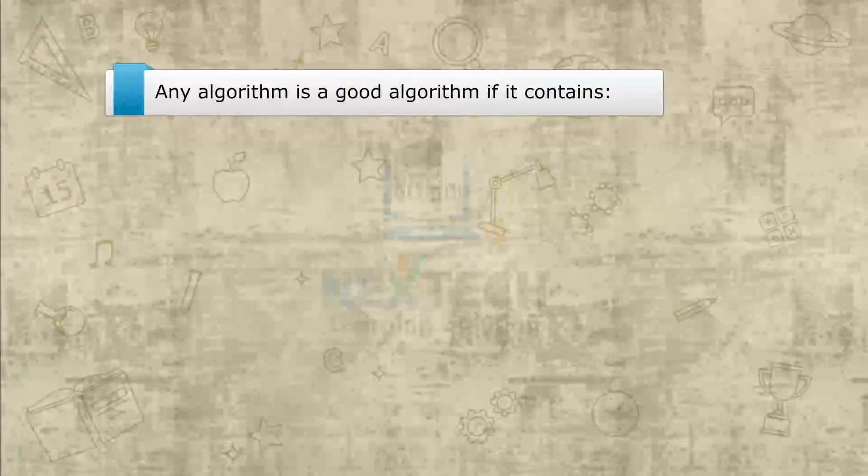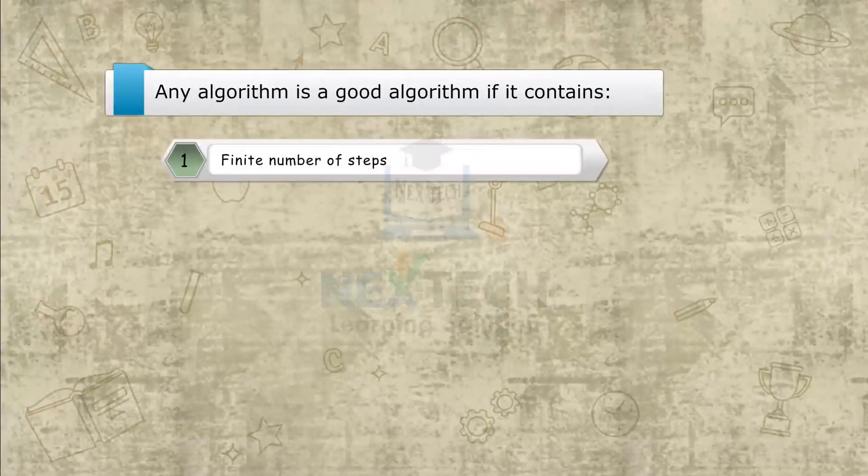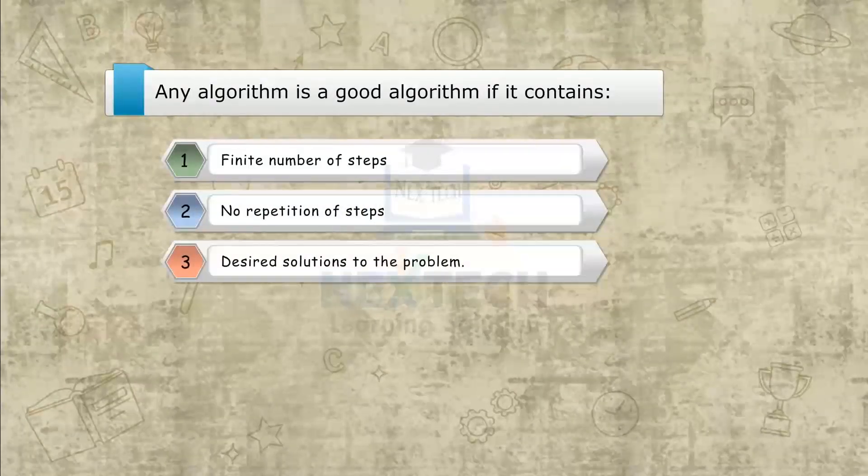Any algorithm is a good algorithm if it contains: finite number of steps, no repetition of steps, desired solutions to the problem, defined set of inputs and variables.